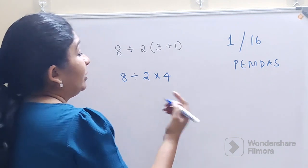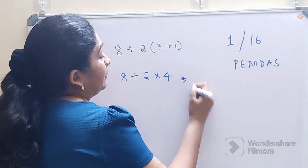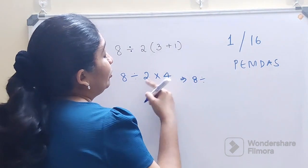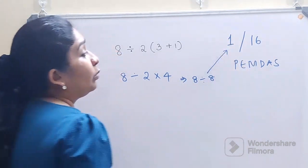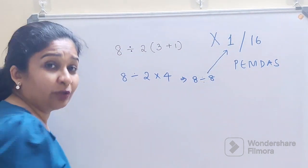But with PEMDAS what happened was people took it as 8 divided by 2 into 4, because multiplication comes first. So 8 divided by 8, they got the answer as 1 which is absolutely wrong.